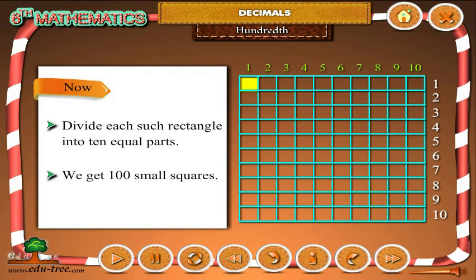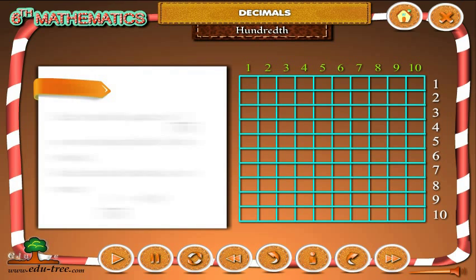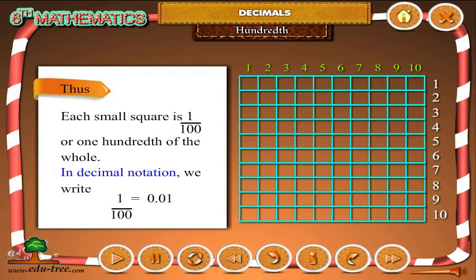Now divide each such rectangle into 10 equal parts. We get 100 small squares. Thus, each small square is 1 by 100 or 1 hundredth of the whole. In decimal notation we write 1 by 100 is equals to 0.01.